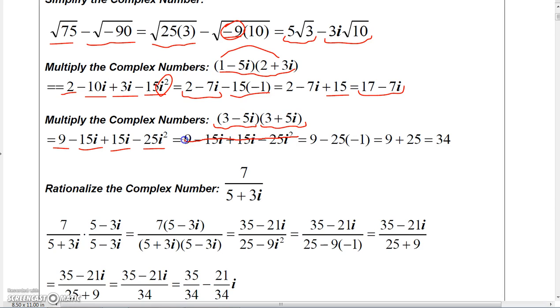Alright, so now you can cancel these terms. -25i², and then you get 9 - 25i². But remember, i² is -1, so that's just 9 - 25 times -1...